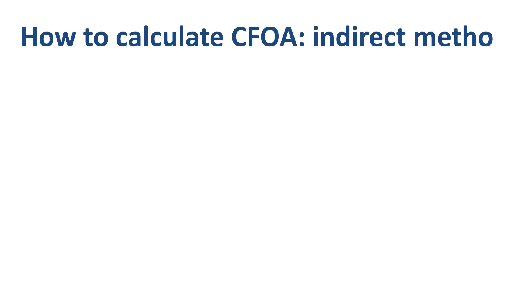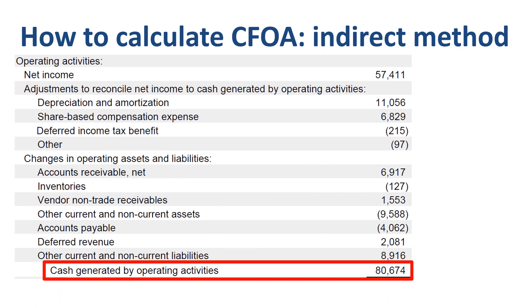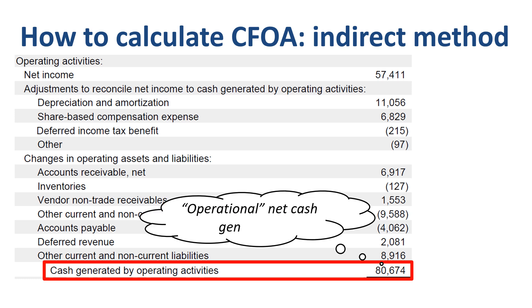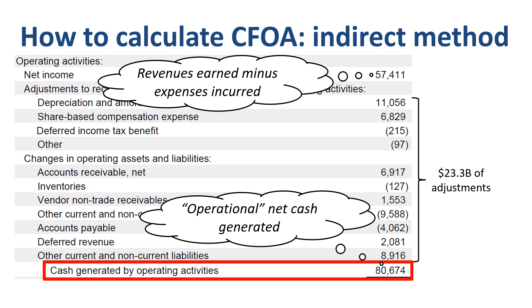Most companies report cash from operating activities using the indirect method. Here's our $81 billion of CFOA for Apple — the operational net cash generated. What does "indirect" refer to? Indirect means we start from the income statement metric called net income, also known as the bottom line of the income statement — a calculation of revenues earned minus expenses incurred — and then make adjustments to arrive at the cash from operating activities number.